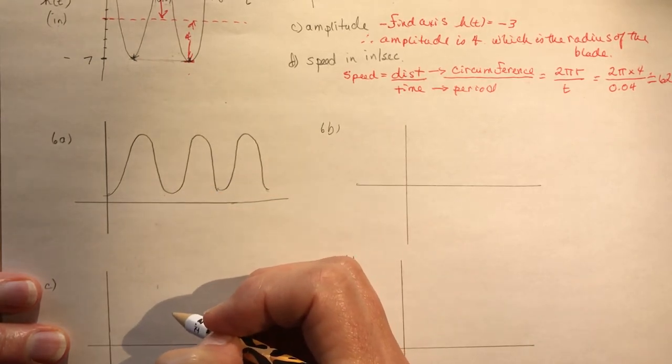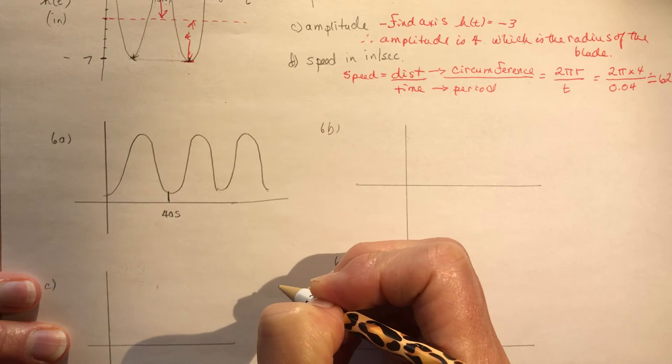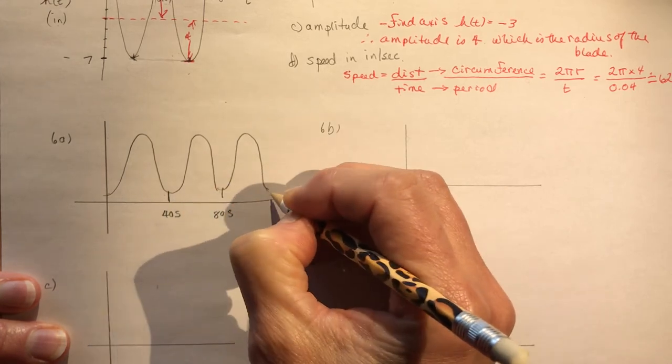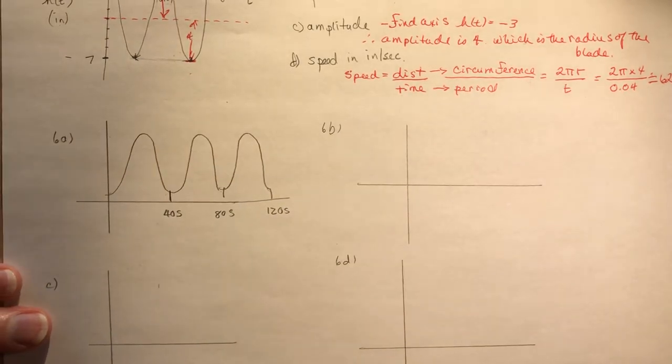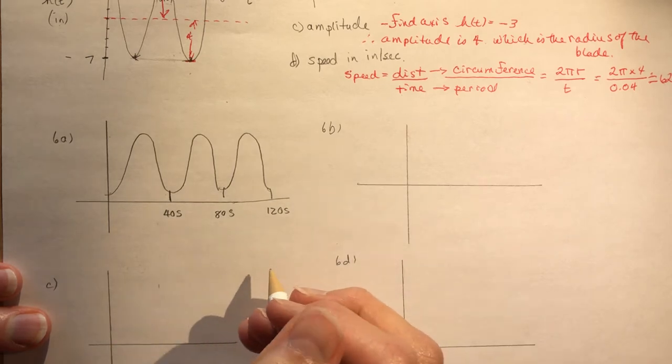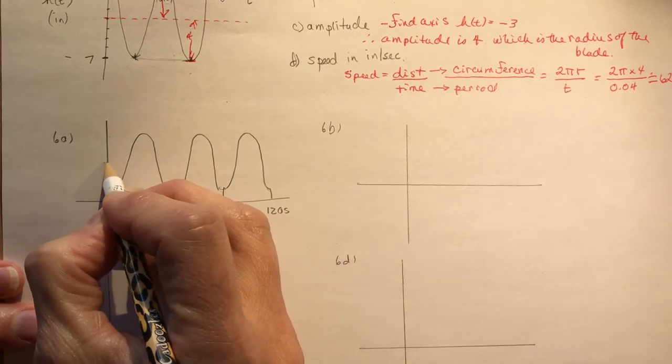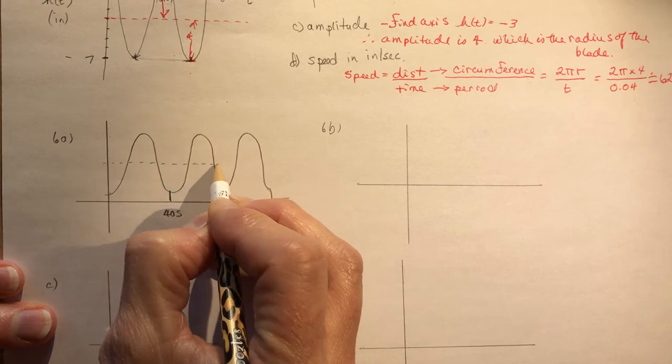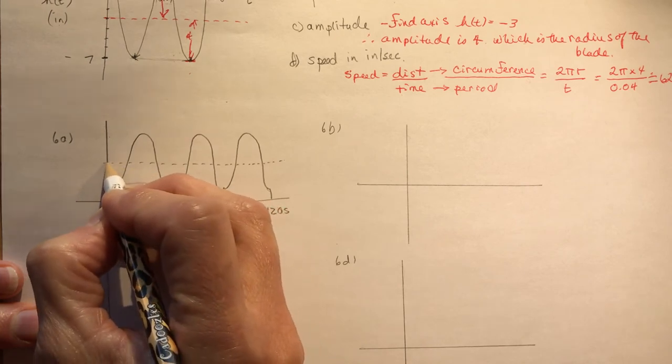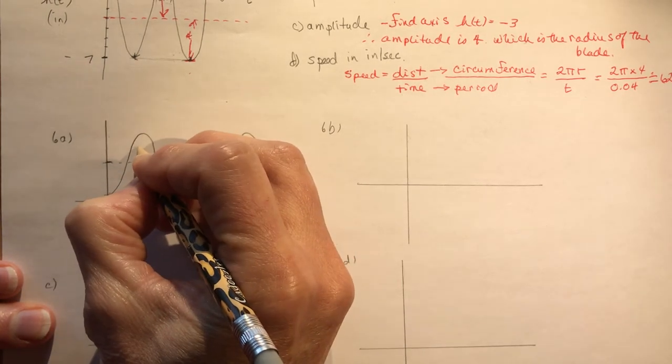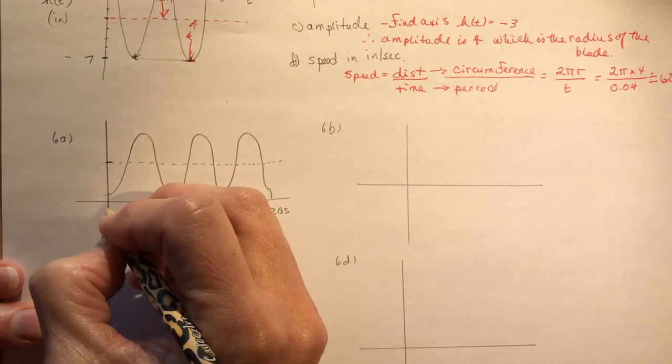Now it tells me that it rotates once every 40 seconds. So this is 40 seconds. This would be 80 seconds. And this would be 120 seconds. Now the next part of this says, that the radius is seven meters and the axle is eight meters above the ground. So the axle is going to be where my middle line is here. The middle line. So here, the axis is, this is seven meters.